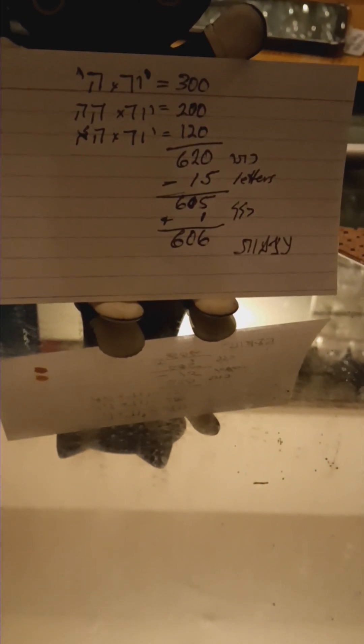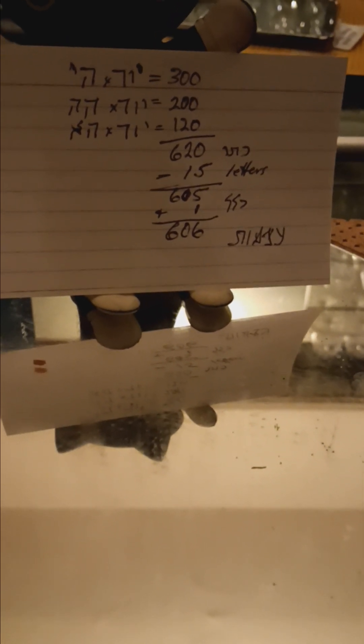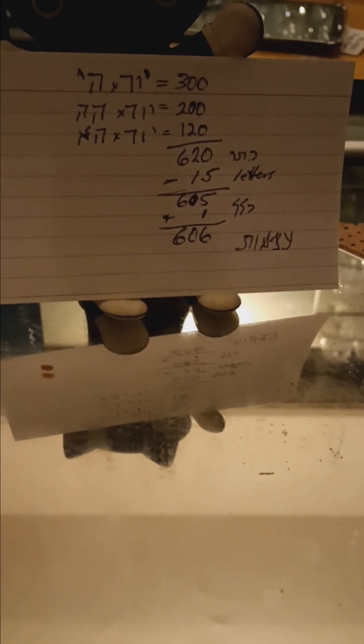Now, strangely enough, in this throwing together of multiplication, it's common to deduct the letters, the Yud He itself, the original Yud He, deduct the letters here, which come out because we're interested in the throwing together and the multiplication. We're not interested in the letters themselves. We're interested in the multiplication.